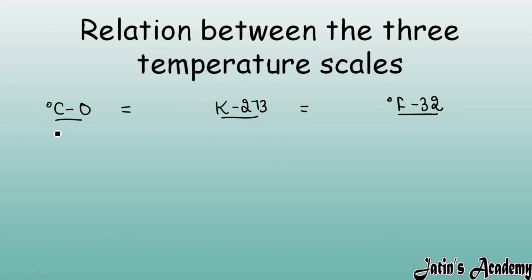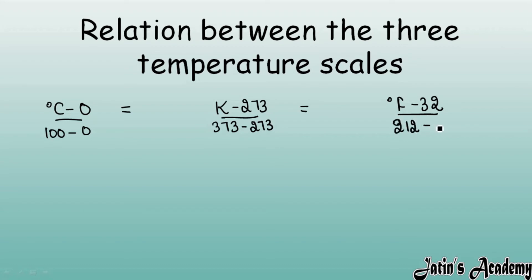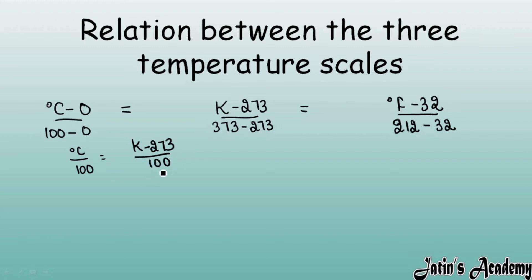You have to write the upper minus lower fixed point for each scale. For degree Celsius: upper is 100 minus lower is 0. For Kelvin: upper is 373 minus lower is 273. For degree Fahrenheit: upper is 212 minus lower is 32. After calculations: degree Celsius minus 0 over 100 equals K minus 273 over 100, which equals degree Fahrenheit minus 32 over 180.